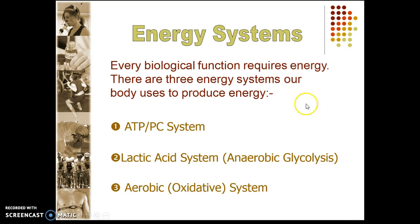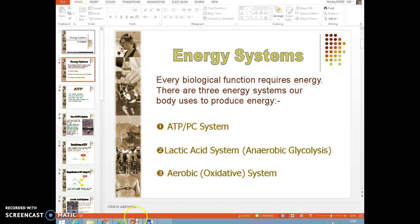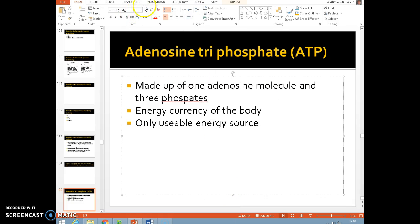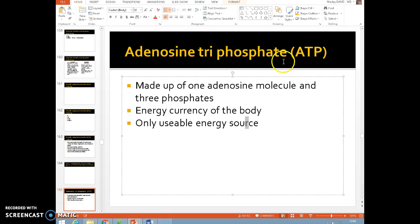I'm going to flip between PowerPoint slides. The first thing we need to get an understanding of is the concept of what ATP is. Adenosine triphosphate basically refers to a molecule with one adenosine molecule and three phosphates. It's the energy currency of the body — it's the only usable energy source that we have in order for us to actually move.